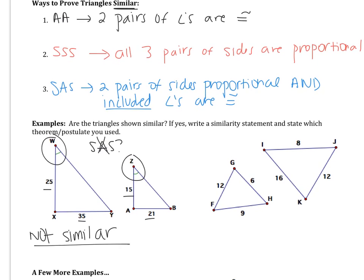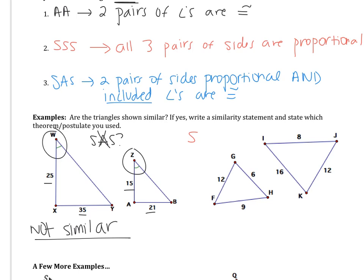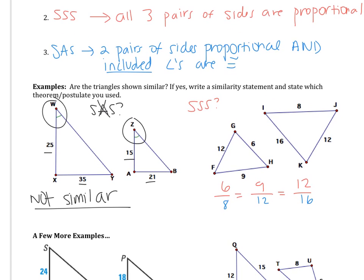Next example, I have three pairs of sides, so it looks like I could be using SSS. In order to use SSS, all the sides have to be proportional. Starting with our first triangle, the smallest side is 6, the medium side is 9, and the largest side is 12. Looking at the triangle on the right, the smallest side is 8, the medium side is 12, and the largest side is 16. You always have to match up small with small, medium with medium, and large with large.